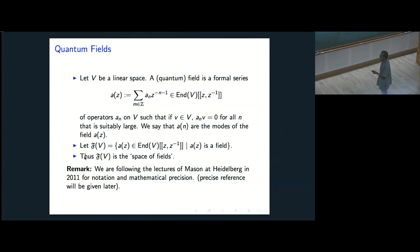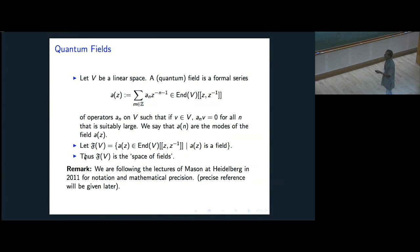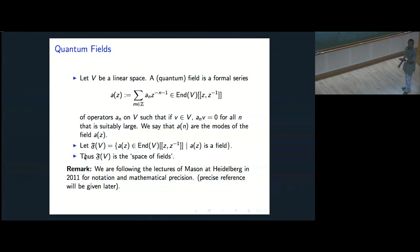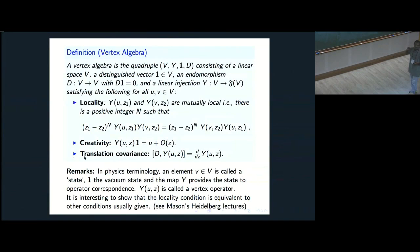With an additional condition: if you pick some vectors in this vector space, this is just an operator — it belongs to endomorphisms of V — so A_N of V will become zero for suitably large N. Let's call this the space of fields. It says that A(Z) belongs to endomorphisms of V, which is a formal power series of Z and Z inverse, with the field condition: for some large enough N, A_N of V is zero.